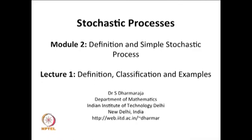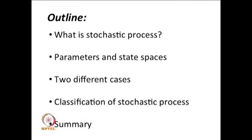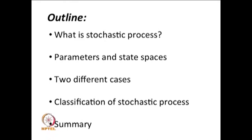We are going to discuss the classification of a stochastic process followed by a few simple examples which arise in real world problems. The content of this lecture is: first the definition of a stochastic process, then how to develop the stochastic process, the meaning of parameter and state space, the approaches in which a stochastic process can be described, classification based on parameter and state space, some simple stochastic processes, and a summary of lecture 1. There are also a few reference books listed for this course.